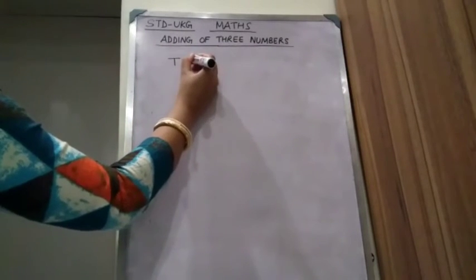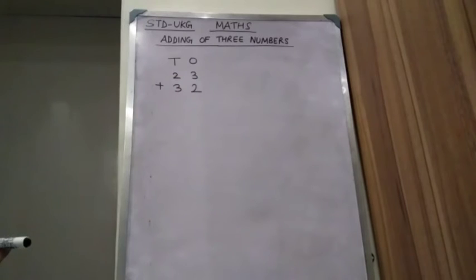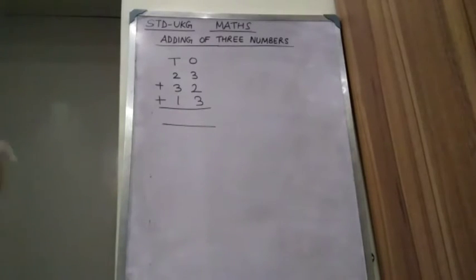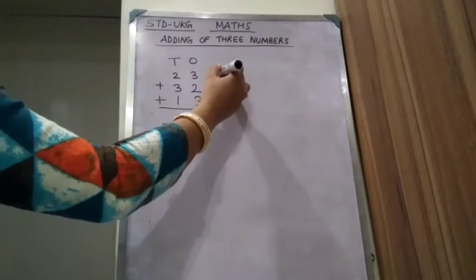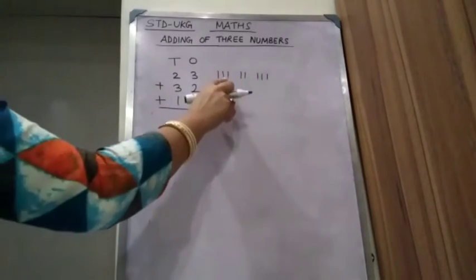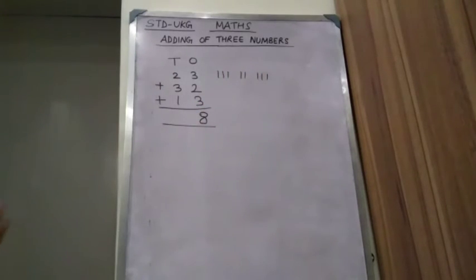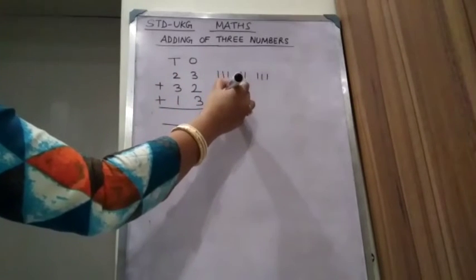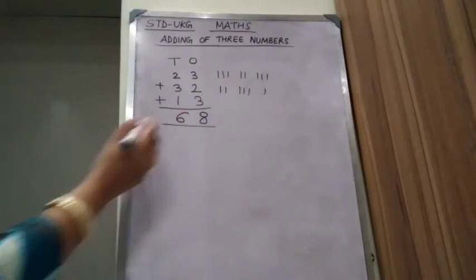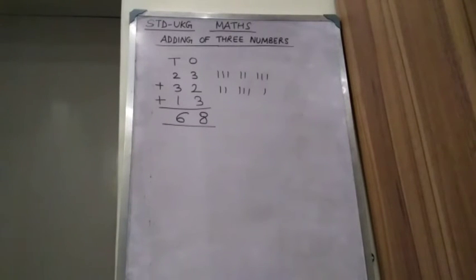Next, add 23 plus 32 plus 13. First you have to add the ones column. The numbers are 3, 2, 3. Count all together: 3, 4, 5, 6, 7, 8. Write 8 here. Now count the tens column: 2 plus 3 plus 1. Count: 1, 2, 3, 4, 5, 6. The answer is 68 — 6 tens, 8 ones.